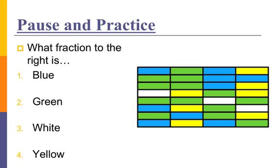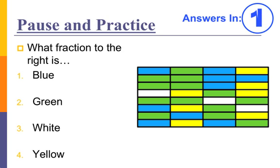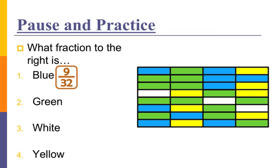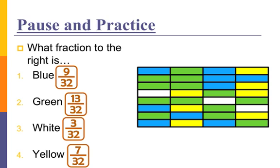So here's your pause and practice. Just pause and practice. When you're done, unpause the video. After a 3, 2, 1 countdown, your answer will be displayed. Go! So let's review our answers. We had to find different fractions for the colors to the right. Number 1: what fraction is blue? Nine over 32. Number 2: what fraction is green? Thirteen over 32. Number 3: what fraction is white? Three over 32. And number 4: what fraction is yellow? Seven over 32.